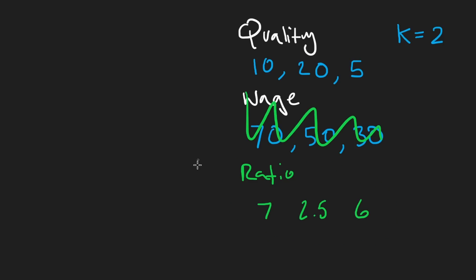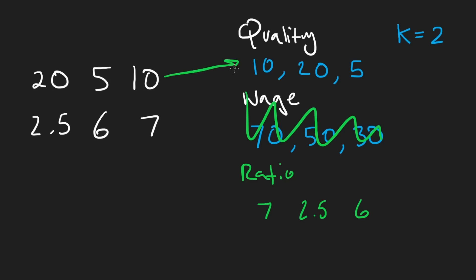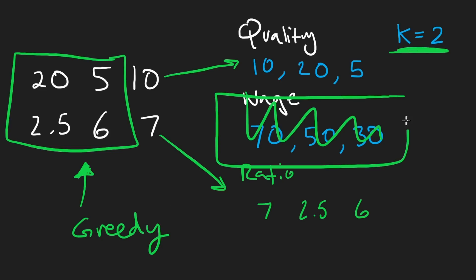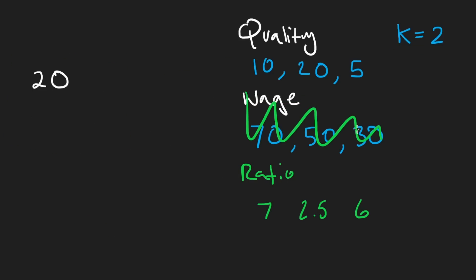So we'll have the quality and the ratio as pairs, and we're going to pick the first two of these and say this is our solution so far. By doing this, we're sort of being greedy. We knew that the wage itself was not enough — we were trying to be greedy with the wage: 70, 50, 30. If we're trying to be greedy with the wage, we just pick the two smallest wages.